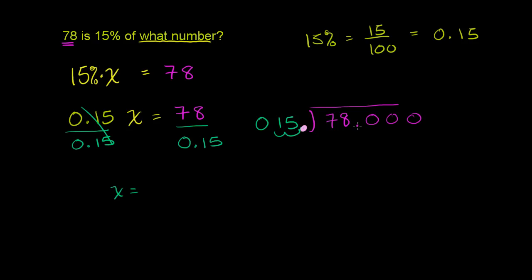And if we did that for the 15, we also have to do that for the 78. So if we move the decimal 2 to the right, 1, 2, it becomes 7,800. So one way to think about it, 78 divided by 0.15 is the same thing as 7,800 divided by 15, multiplying the numerator and the denominator by 100. So let's figure out what this is.